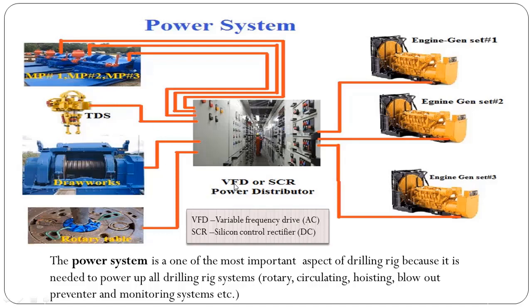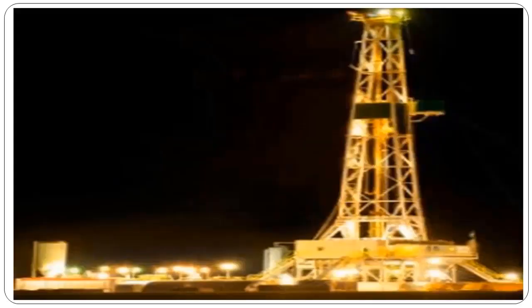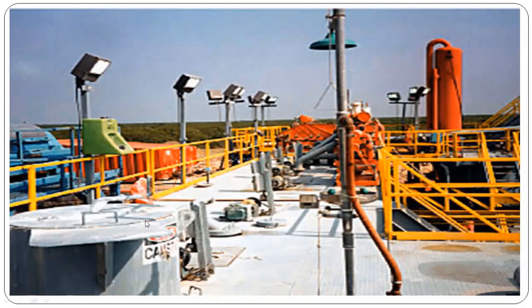If the rig has a VFD power distribution system, it means there are AC electric motors on the rotary table, draw works, top drive system, and mud pumps. Electric power from the power distribution system is then supplied to all individual rig components including mud pumps, TDS, draw works, rotary table, and also for lighting on the rig floor, the mast or derrick, and the mud tank or circulation system.